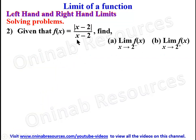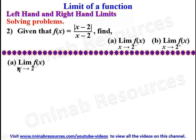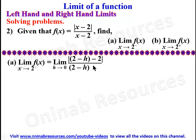For the second problem: given that f(x) = |x − 2| / (x − 2), find the left-hand limit and right-hand limit as x approaches 2. Looking at the limit from the left-hand side, we substitute x = 2 − h, giving us |( 2 − h) − 2| over (2 − h) − 2. This simplifies to |2 − 2 − h| over (2 − 2 − h), which is |−h| over −h.